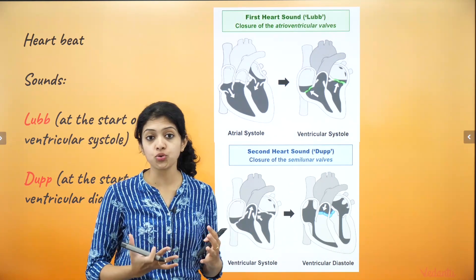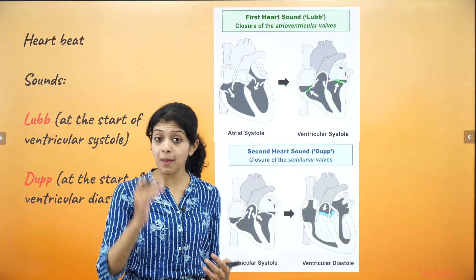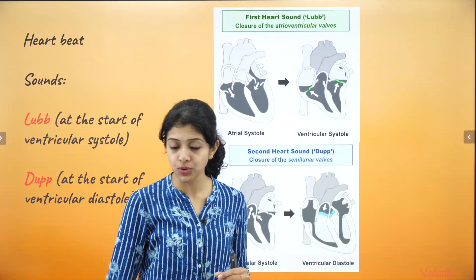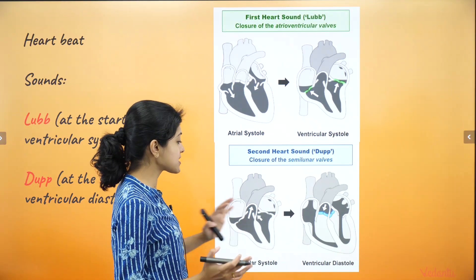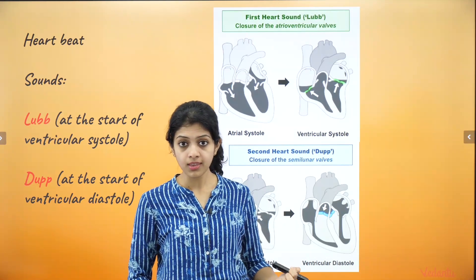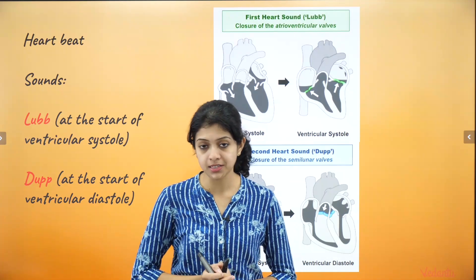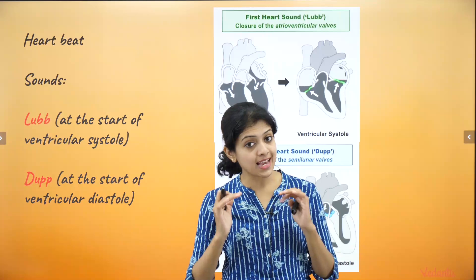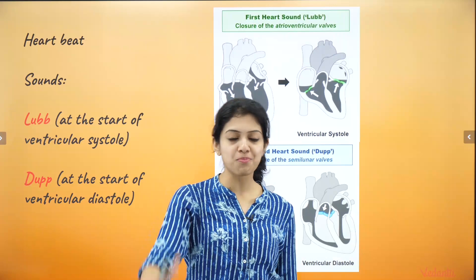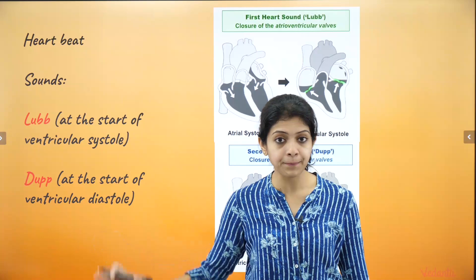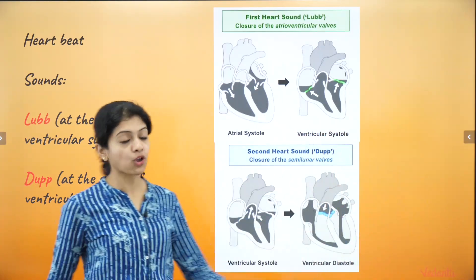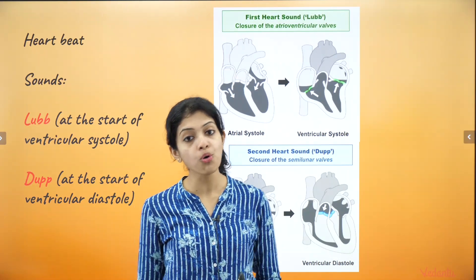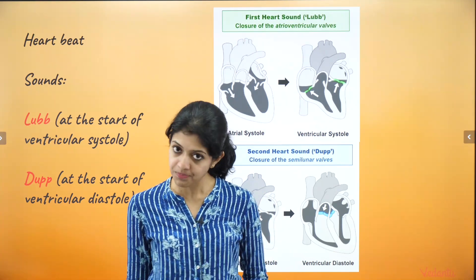The second sound, dup, is produced when the semilunar valves close. The semilunar valves are the moon-shaped valves at the junction between the ventricles and the pulmonary artery and the aorta. Their closure occurs when the ventricles are about to relax — during ventricular diastole — producing the dup sound. So: lub is caused by closure of AV valves at the start of ventricular systole, and dup is caused by closure of semilunar valves at the start of ventricular diastole. This is very important to understand before answering any question on this topic.